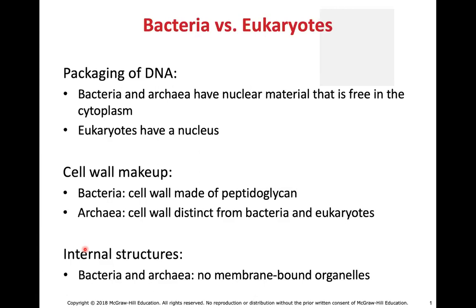Bacteria will also have a cell wall. There are eukaryotes that also have a cell wall, but the one cell type that does not have cell walls are animal cells, which include human cells. Animal cells are eukaryotes but they lack a cell wall. Just because bacteria have a cell wall, they will still have a phospholipid membrane. All living cells will have a phospholipid membrane, also called a cell membrane or plasma membrane.